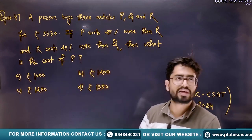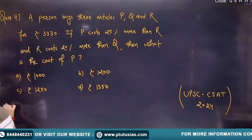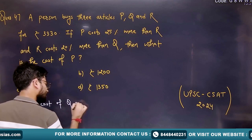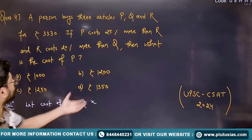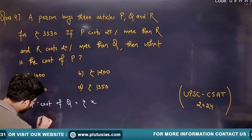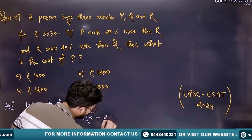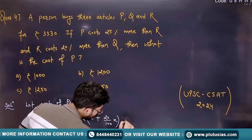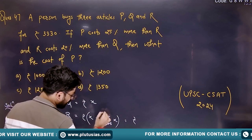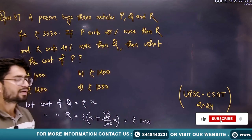We have to find the cost of P. Let the cost of Q be X rupees. We know R costs 20% more than Q, so the cost of R will be X + 20% of X. Simplifying: 20% of X is 0.2X, so X + 0.2X = 1.2X rupees. That is the cost of R.